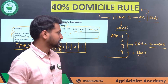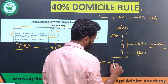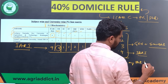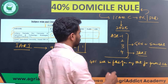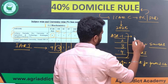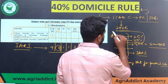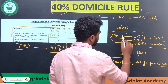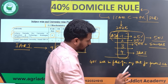This is because of the domicile restriction. According to the domicile rule, only 40 percent of seats will be filled from any single state for any particular category. Now, since there are four general seats, each candidate represents 25 percent. Even the first two students together make 50 percent, which exceeds 40 percent. So in this case, only the first ranker will actually get IARI — ranks two, three, and four will not get it.